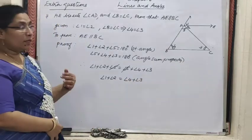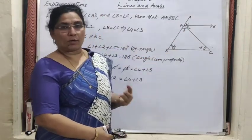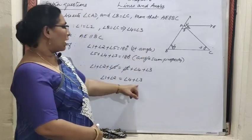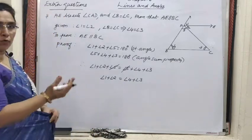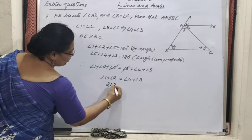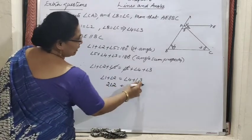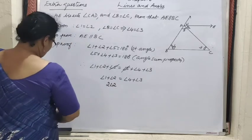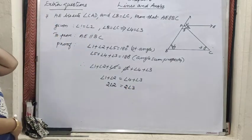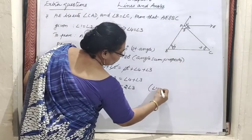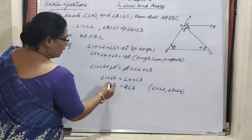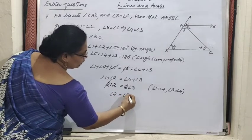We need angle 2 and angle 3 — our purpose is alternate interior angles being equal. So 1 and 4 must be eliminated. Since angle 1 equals angle 2 by bisector property, we write 2 times angle 2 on the left. And since angle 3 equals angle 4 by base angle property, we write 2 times angle 3 on the right. Cancel the 2s — we get angle 2 equals angle 3.